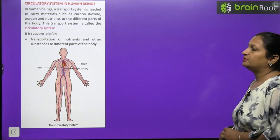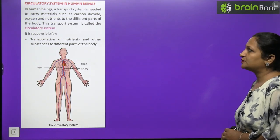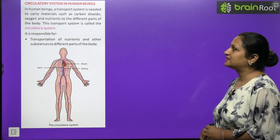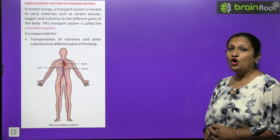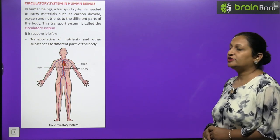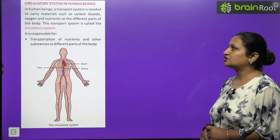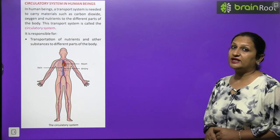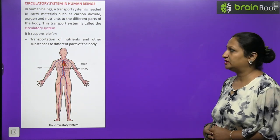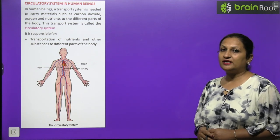Circulatory system in human beings. In humans, a transport system is needed to carry substances like carbon dioxide, oxygen, and nutrients to different parts of the body. This transport system is called the circulatory system. It is responsible for distribution of nutrients to every cell, delivering oxygen to each cell for oxidation of food.